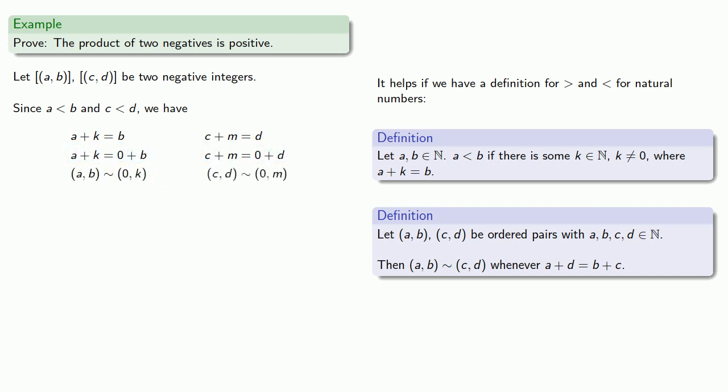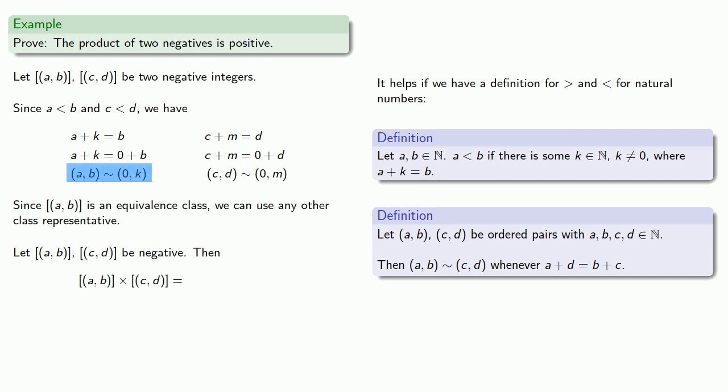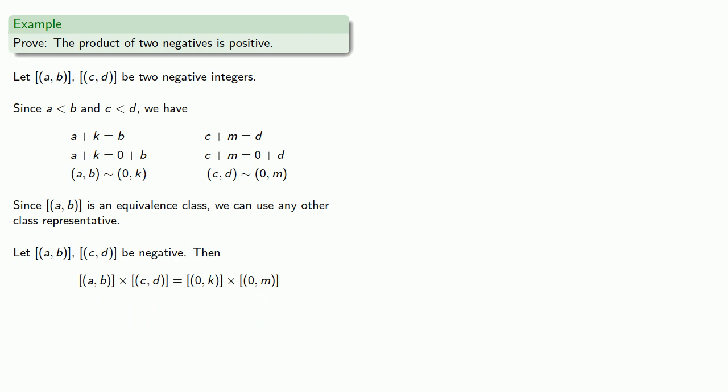Well, what good does that do? One of the things to remember is that since we are working with equivalence classes, we can use any other class representative. And so instead of the equivalence class with class representative a, b, we'll use another class representative, zero, k. And likewise for the equivalence class with class representative c, d, we'll use a different class representative, zero, m. And now we have much easier equivalence classes to work with, and we can find their product.